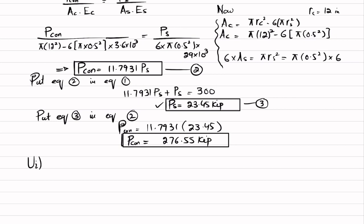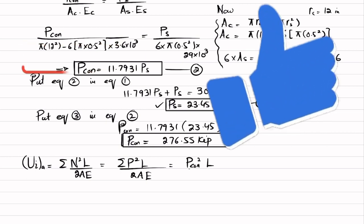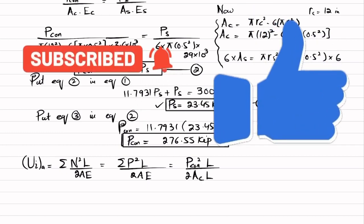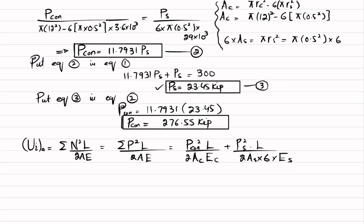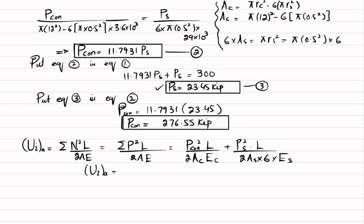Now we find the strain energy due to axial loading using the formula: U = Σ(P²·L)/(2·A·E). Writing it out: U = [P_concrete²·L/(2·A_concrete·E_c)] + [P_steel²·L/(2·A_steel·E_steel)]. Since there are six steel rods, A_steel = 6·π(0.5²) is used.